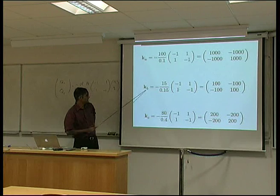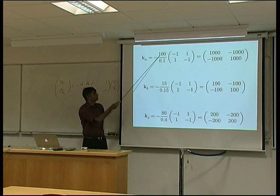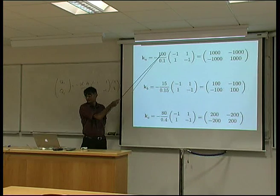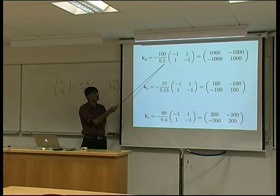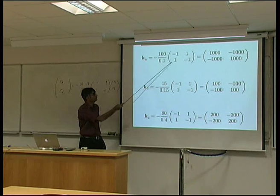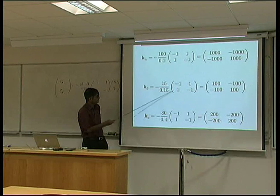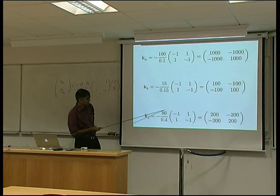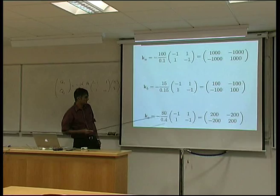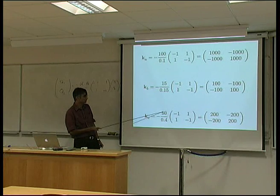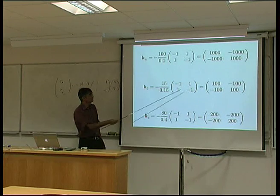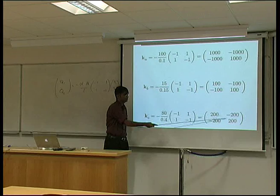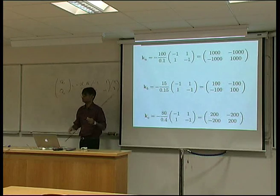Right, so, for element A, B, and C, this time, we have different conductivities and different lengths. So, these matrices are actually different, because they have been scaled by the area, by the conductivity and the length, and we end up with three of the thermal stiffness matrices for the three elements.